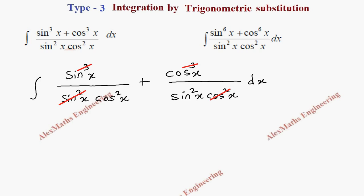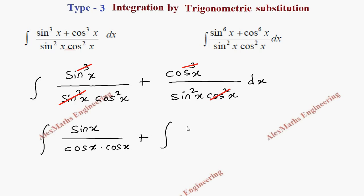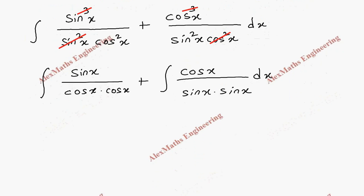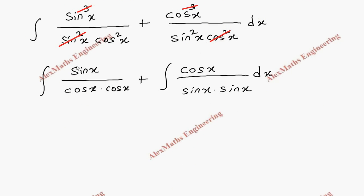So cos x will be remaining. Let's write the remaining part: this is sin x, and cos²x can be written as cos x · cos x. In the same way, the second term has cos x remaining in the numerator and sin²x in the denominator, which can be written as sin x · sin x dx. Now this part will become tan x and the remaining 1/cos x will become sec x.